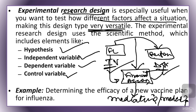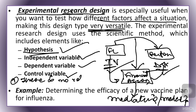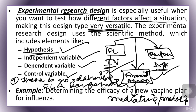We can keep adding various types of variables in experimental research design. We also make different types of hypotheses — for example, a null hypothesis stating there is no relationship between financial literacy and performance. This is a very wide kind of research design applicable whenever you are conducting research.